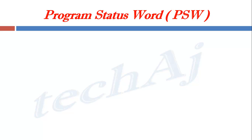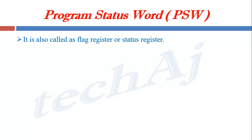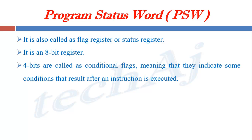In this video, we are going to discuss the program status word, that is the PSW register of 8051 microcontroller. It is also called as a flag register or status register. It is an 8-bit register. Out of 8 bits, 4 bits are called conditional flags, meaning that they indicate some conditions that result after an instruction is executed. Whenever the ALU of 8051 performs some operation, it may generate some conditions which should be indicated to the CPU, and such conditions will be reflected by this status register.